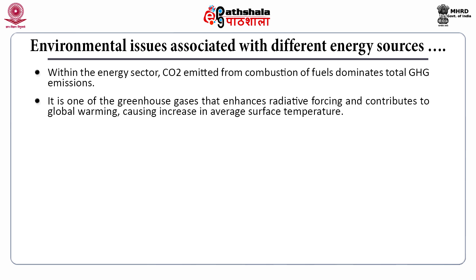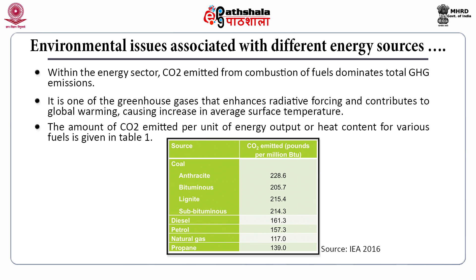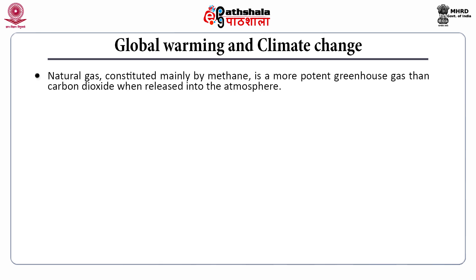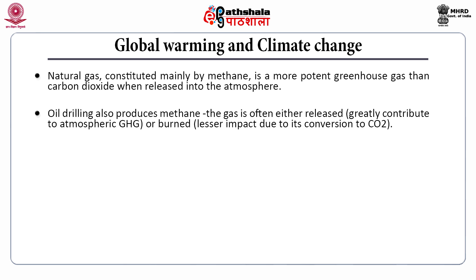Global warming causes an increase in average surface temperature. The amount of carbon dioxide emitted per unit of energy output for various fuels is shown in this table. Coal, especially anthracite, has higher emissions at around 228 pounds per million BTU, compared to natural gas at 117 pounds per million BTU. Natural gas, constituted mainly by methane, is a more potent greenhouse gas than carbon dioxide when released into the atmosphere, as methane has 21 times higher global warming potential than CO2. Oil drilling also produces methane, which is often either released into the atmosphere — greatly contributing to greenhouse gas levels — or burned, resulting in lesser impact due to its conversion to CO2.